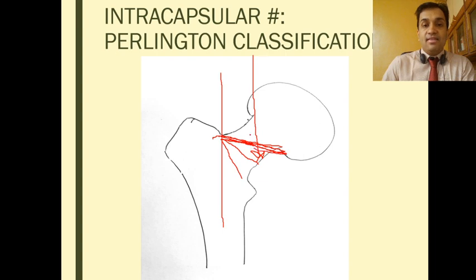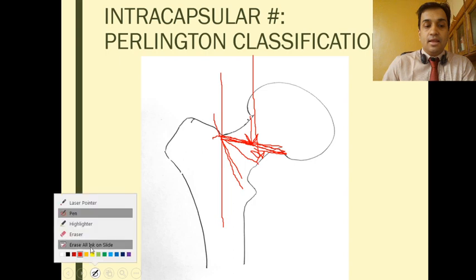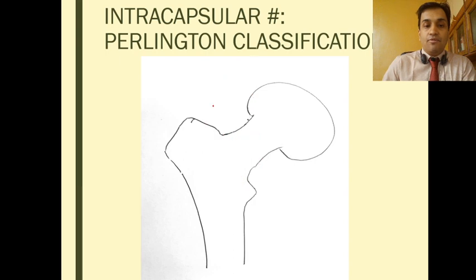In a more horizontal fracture line, as the patient bears weight there will be compression of the fracture fragments on top of each other and healing will be better. Whereas in a more vertical fracture line,